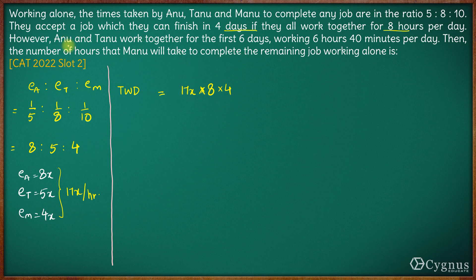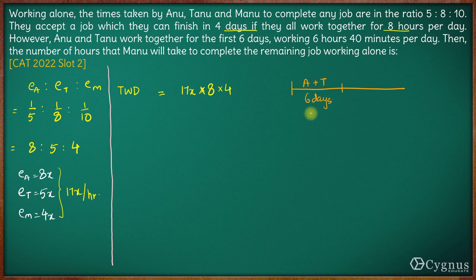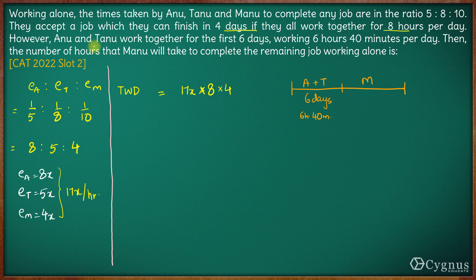However, this is not the way they actually do the work. What they do is Anu and Tanu work together for the first 6 days, working 6 hours and 40 minutes per day. After that, Manu alone works to complete the remaining job. Let us say Manu takes t more hours to complete the remaining job.